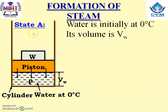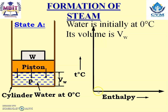Let us take state A. At state A, water is initially at 0 degree Celsius. Volume is VW, and the water is at temperature 0 degree Celsius. Some weight is placed on the piston, and due to that a constant pressure is acting on the water. Let us draw the temperature versus enthalpy diagram for this. State A is represented at the point where temperature is 0 degree Celsius, so it is located at point A.